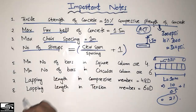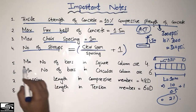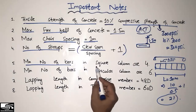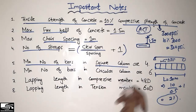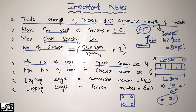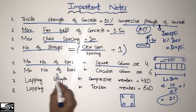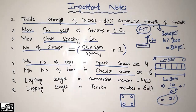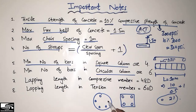The fifth point is that the minimum number of bars in square columns is four. The four bars are placed at the edges of the square column. The minimum number of bars in a circular column must be six. The codes recommend that you must use at least six bars in a circular column.